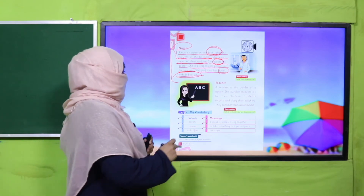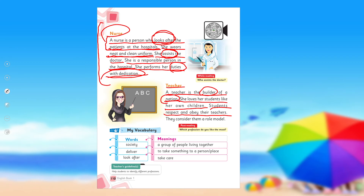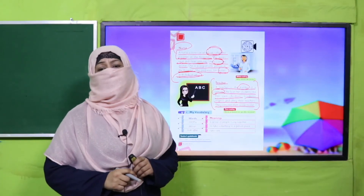Then there is the teacher. A teacher is the builder of a nation — teacher apni qaum ka maamar hota hai, whether female or male. She or he loves their students like their own children — ustaad apne shagird se apne bacho ki tarah pyaar karte hain. I love you just like my own children. Students respect and obey the teacher and consider them a role model — they want to follow them and become like them.